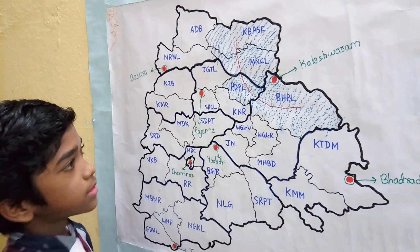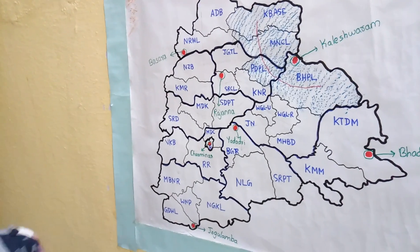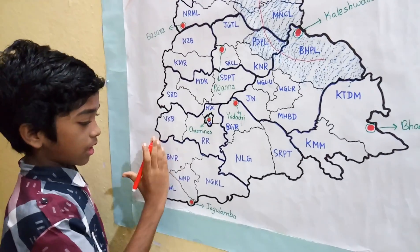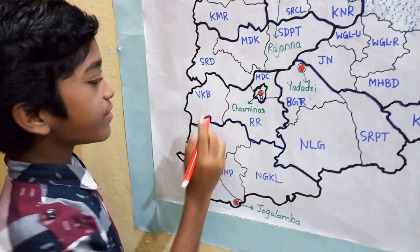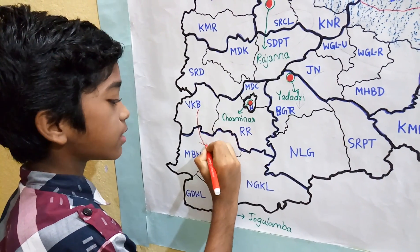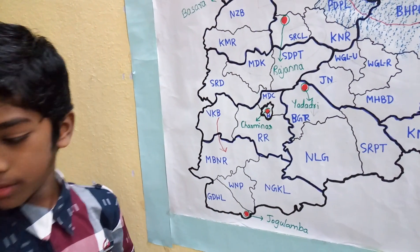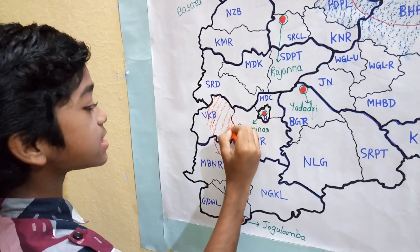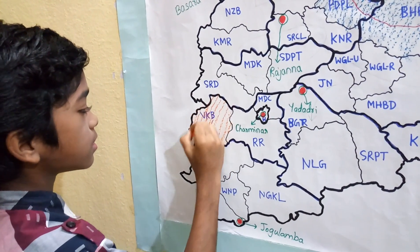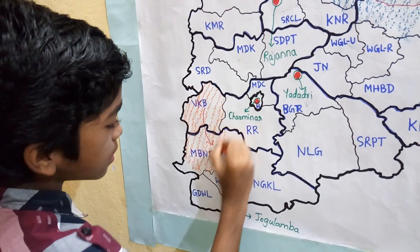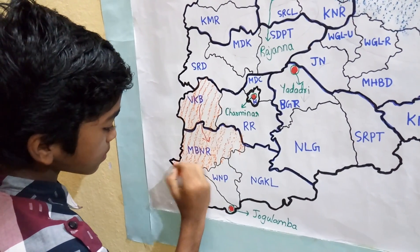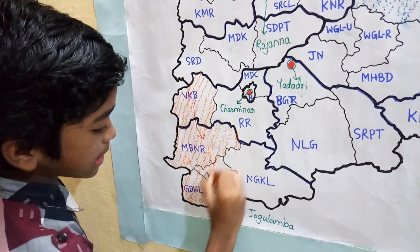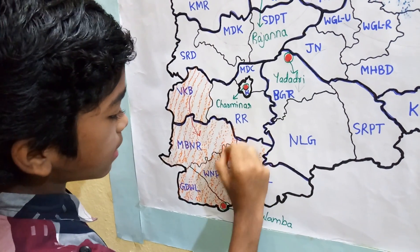So, these are the districts of Kaleshwaram zone. Now, we take the old Mahabubnagar district and add Vikarabad district to it, so that we get Jogulamba zone. It has 5 districts: Vikarabad, Mahabubnagar, Jogulamba Gadwal, Wanaparthy, and Nagarkurnool.